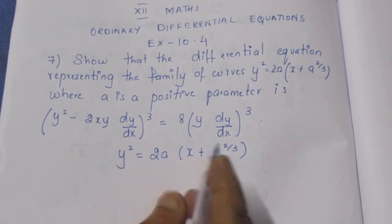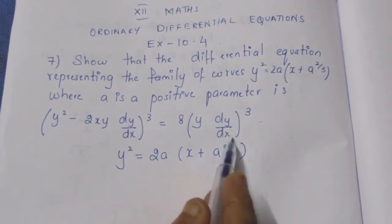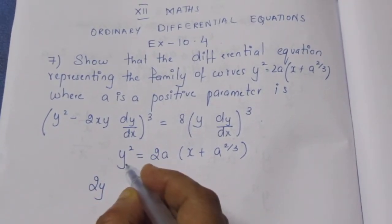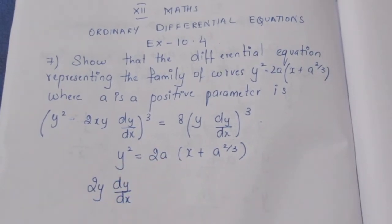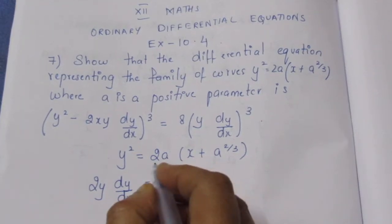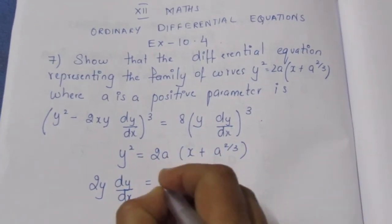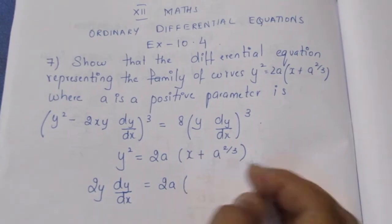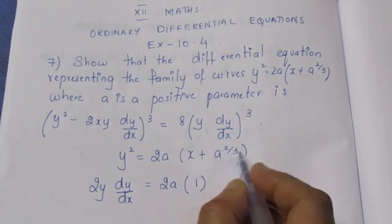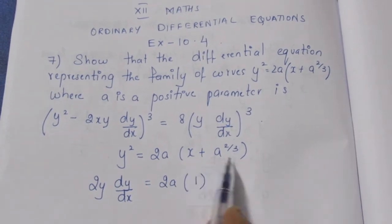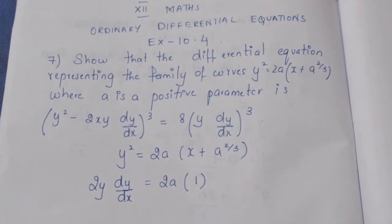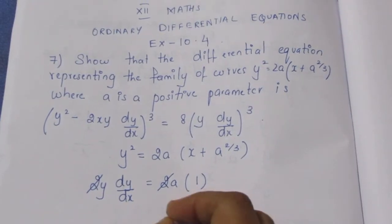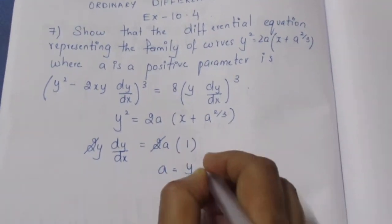Differentiating with respect to x, the coefficient of x is 1, the constant term is 0, so we get 2y·dy/dx = 2a into 1. The 2 cancels, giving us a = y·dy/dx.